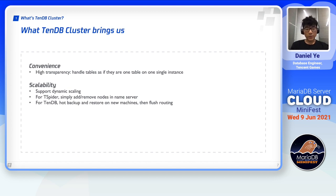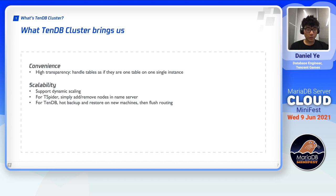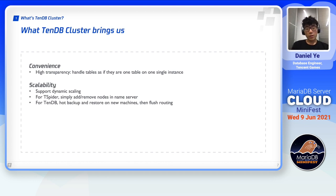For T-Spider, depending on whether you're scaling up or down, all you need to do is add or remove T-Spider nodes, both in your application's name server and the cluster's routing table. For TenDB, we support vertical scaling. In this case, you need to do a hot backup and restore the instances on your new machine, then modify and flush the cluster routing.